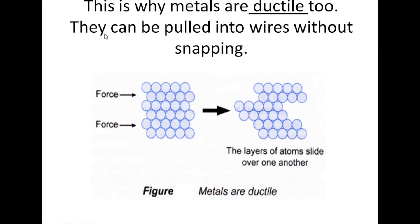Metals are ductile too — they can be pulled into wires without snapping. Because the positive metal ions are in layers, they can move over each other, so metals are ductile.